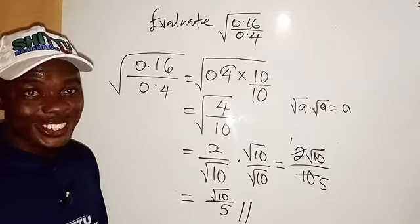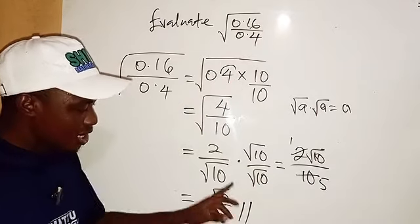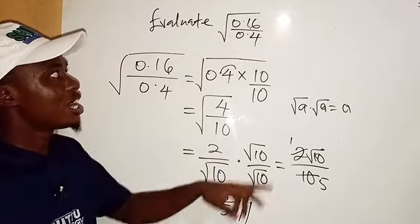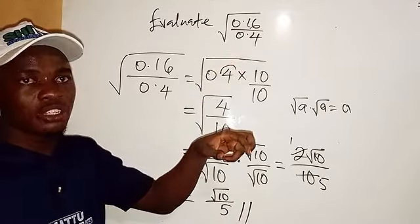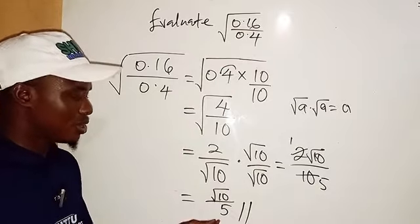Now you can press your calculator to see whether you are going to have this. Try to press the calculator for root 10 over 5, what will it give you in decimal? And this also, what will it give you in decimal? Try to compare the two answers and see whether we are right or not.